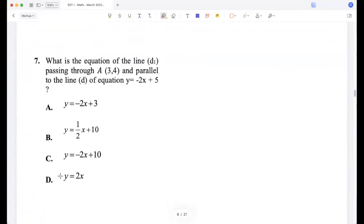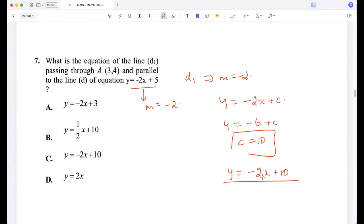What is the equation of the line passing through this and parallel to the line of equation this? So this line has a slope of negative 2, so d1 will also have a slope of negative 2 because d1 is parallel to this line. So I can say y is -2x + c for d1, and because it passes through (3, 4), I can substitute that. So 4 is -6 plus c, so c is 10. So y is -2x + 10. Option C.